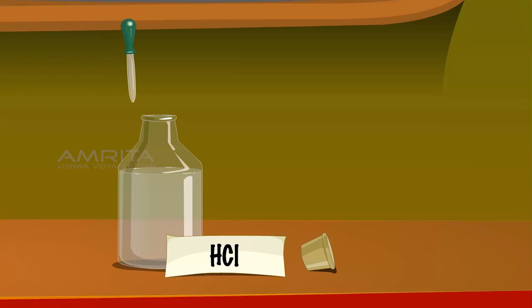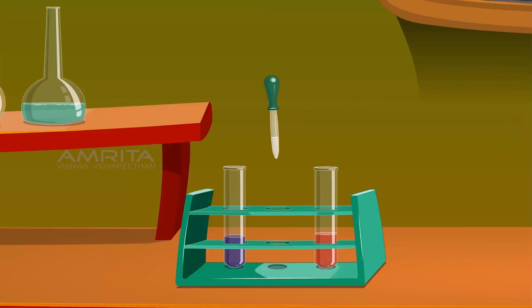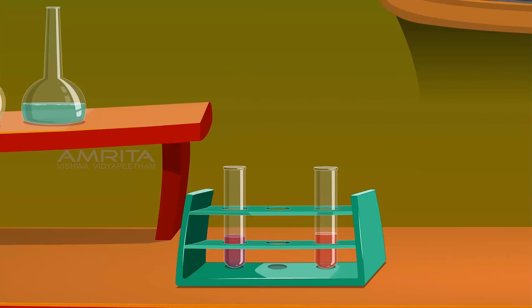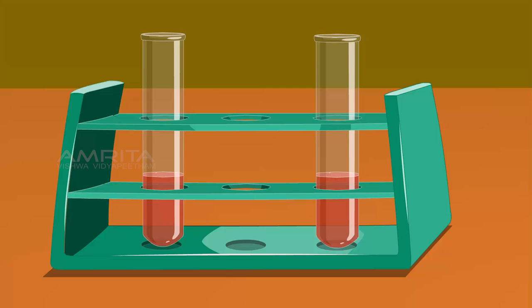Take a few drops of HCl solution from its bottle using the dropper. Add this to the test tube containing the blue litmus solution and note the change in colour. The colour of the solution changes from blue to red. HCl is an acid with a pH value below 7.